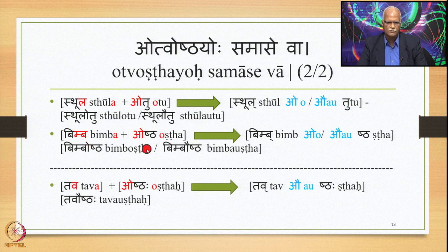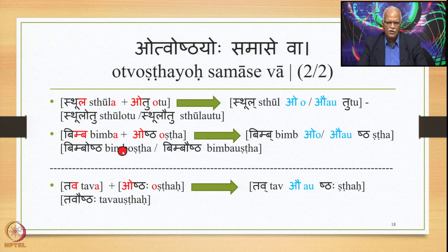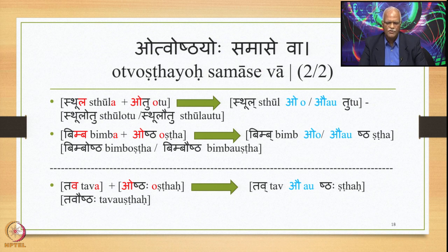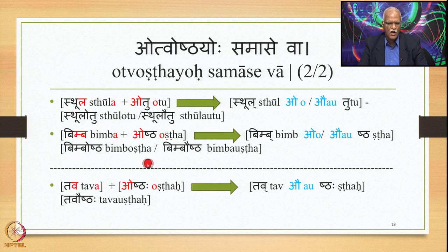Similarly, Bimba plus Oshtha in a Samasa: Bimba is the Purvapada, Oshtha is the Uttarapada; A belongs to the Purvapada, O to the Uttarapada. In the Samasa, Samhita is obligatory, so A is followed by O. This is also a case for Vriddhi Rechi, but because specific words are mentioned in this Vartika, Vriddhi Sandhi does not apply. In place of A and O, the Pararupa O is substituted, giving Bimb + O + shtha = Bimboshtha. Optionally, Vriddhi Sandhi also gives Bimboushtha.